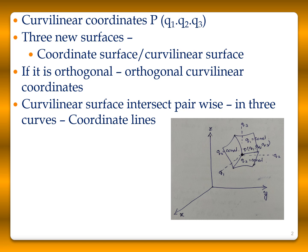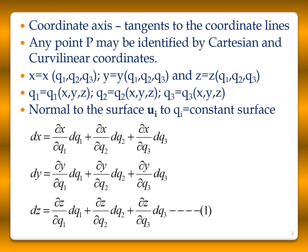If the coordinates are orthogonal, they are called orthogonal curvilinear coordinates. These curvilinear surfaces intersect pairwise along three curves, which are called coordinate lines. The tangents to the coordinate lines are called coordinate axes. Any point P can be identified by both Cartesian and curvilinear coordinates.